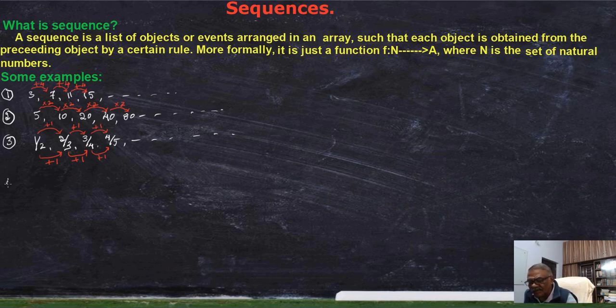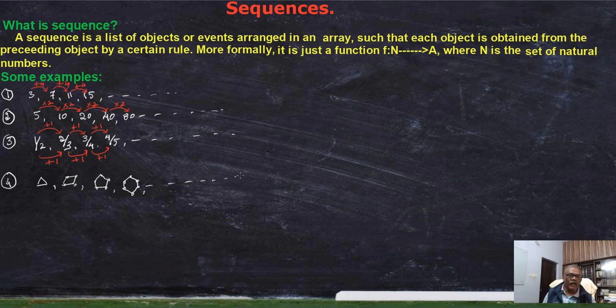For example, the fourth example I am giving you here: a sequence of polygons, a geometrical figure. This array of polygons forms a sequence because each polygon is obtained from the previous polygon by a certain rule. What is that rule? Consider: